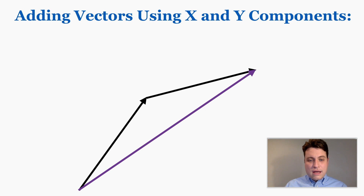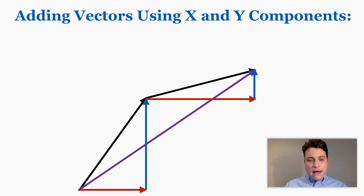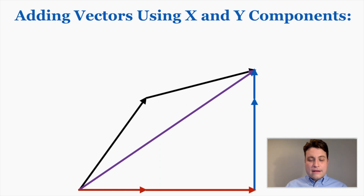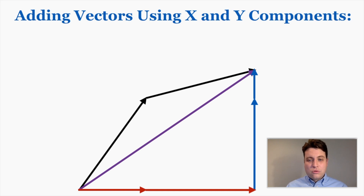The first step is to find the x and y components of each individual vector. You'll notice that the total x component of the two vectors working together and the total y component of the two vectors working together actually make the total x and y components of the overall resultant vector. When I add the red arrows together they make the total x component of the resultant, and when I add the blue arrows together they make the total y component.